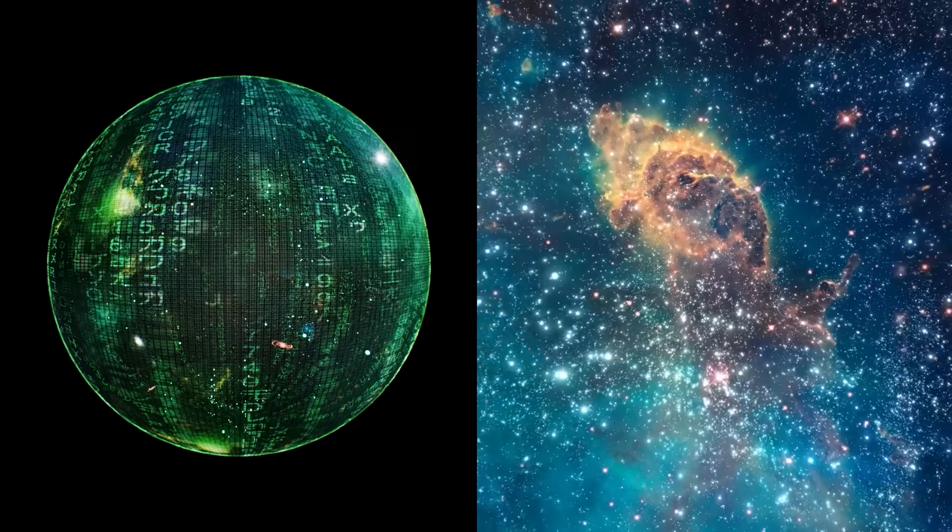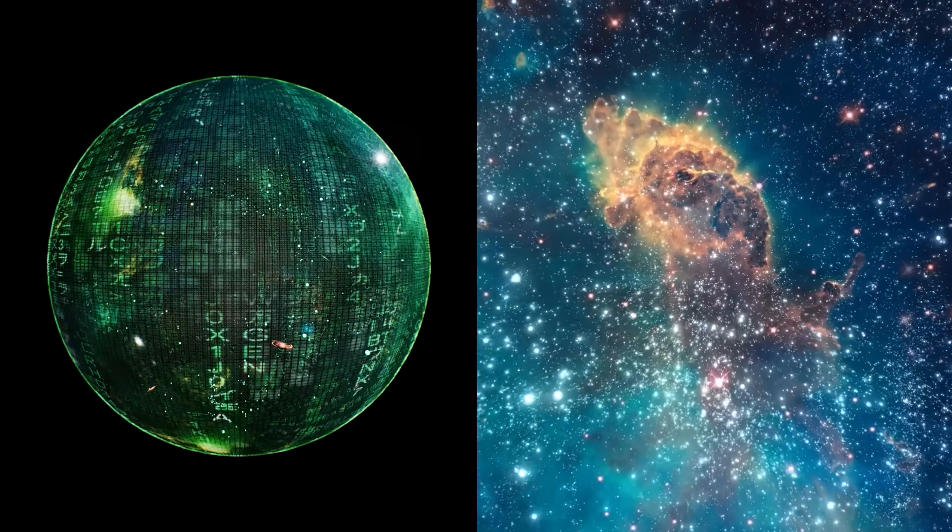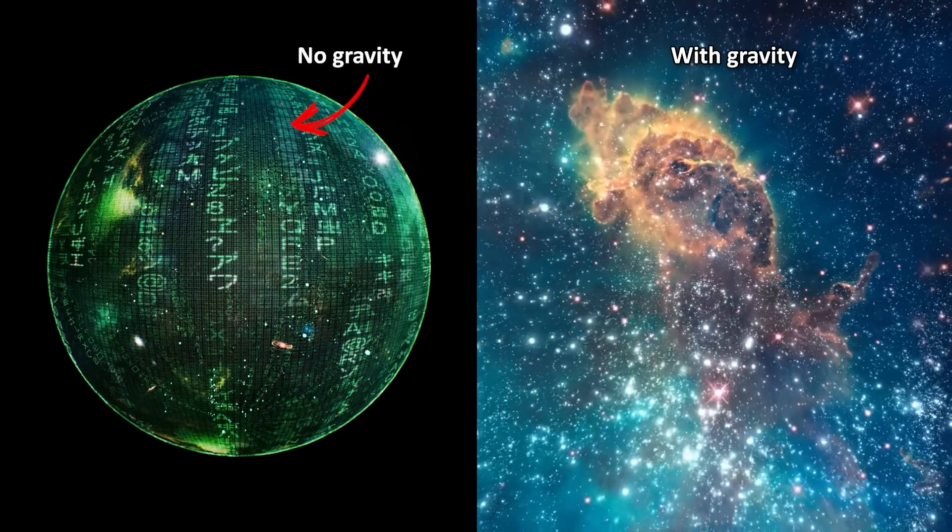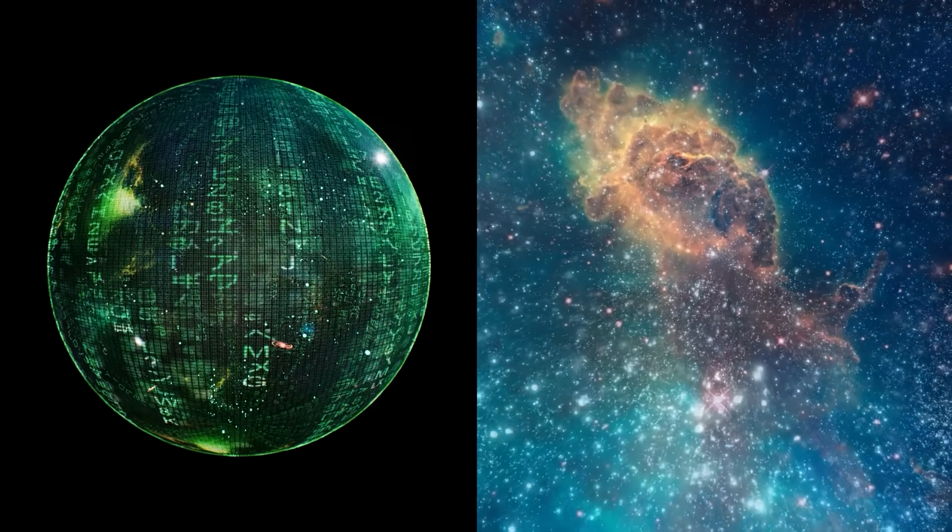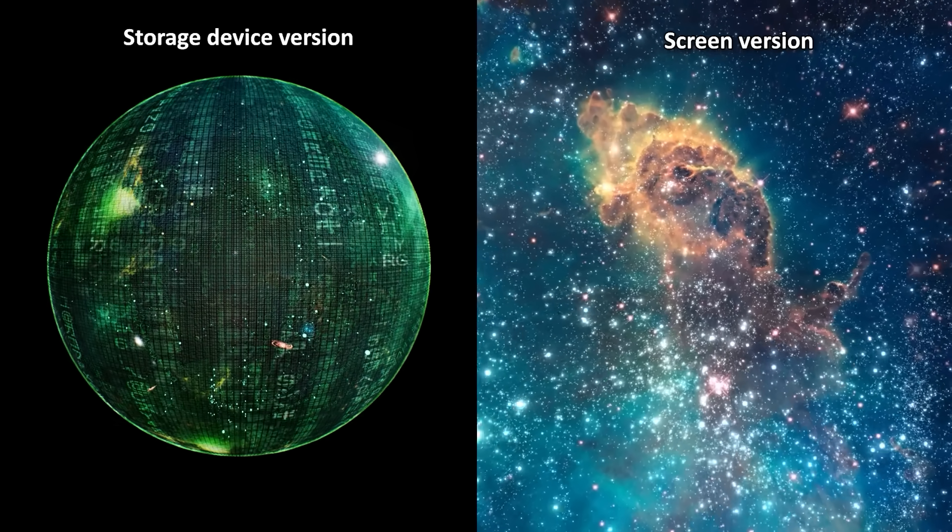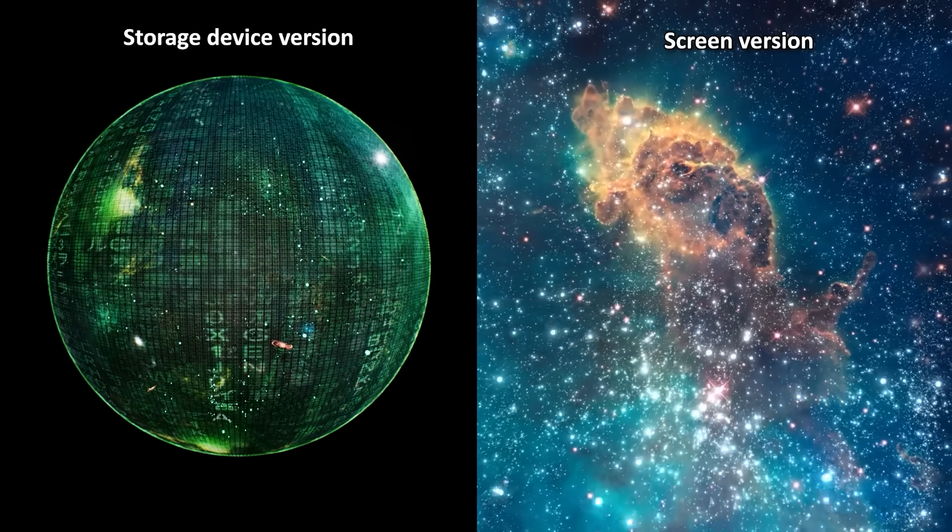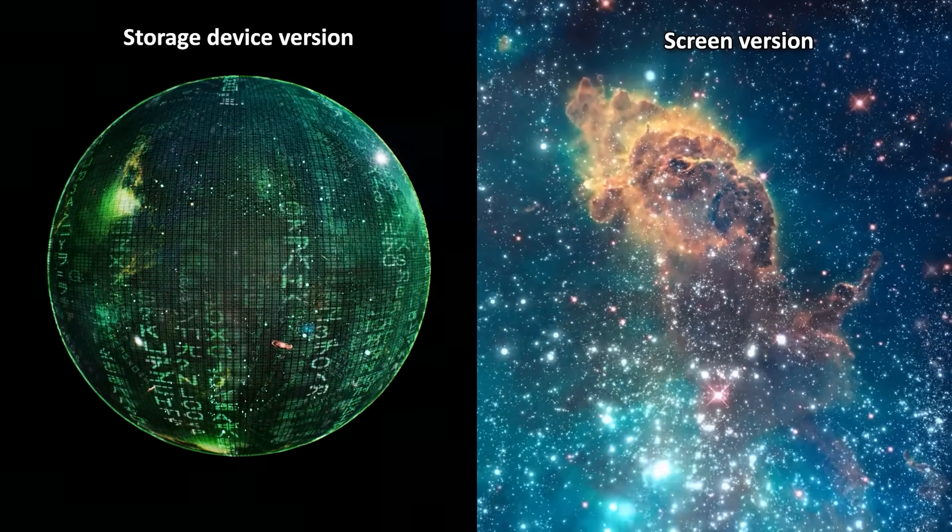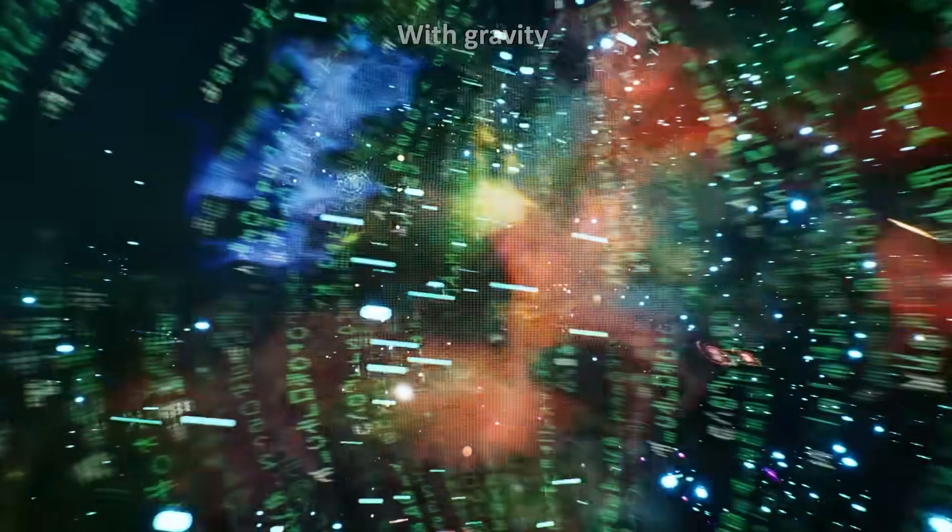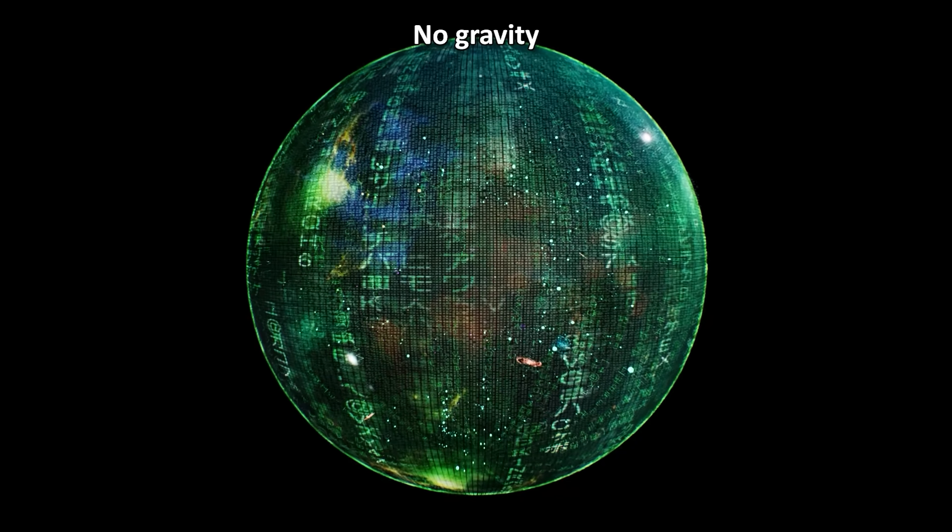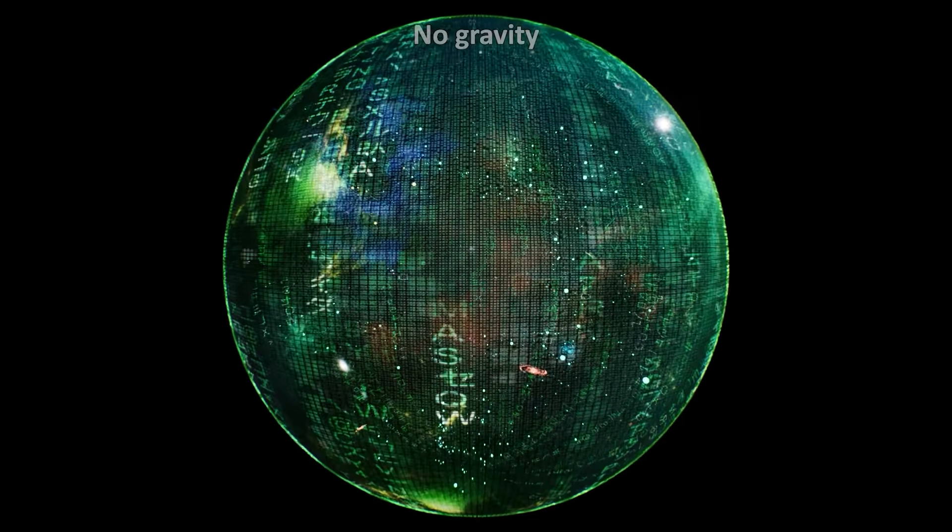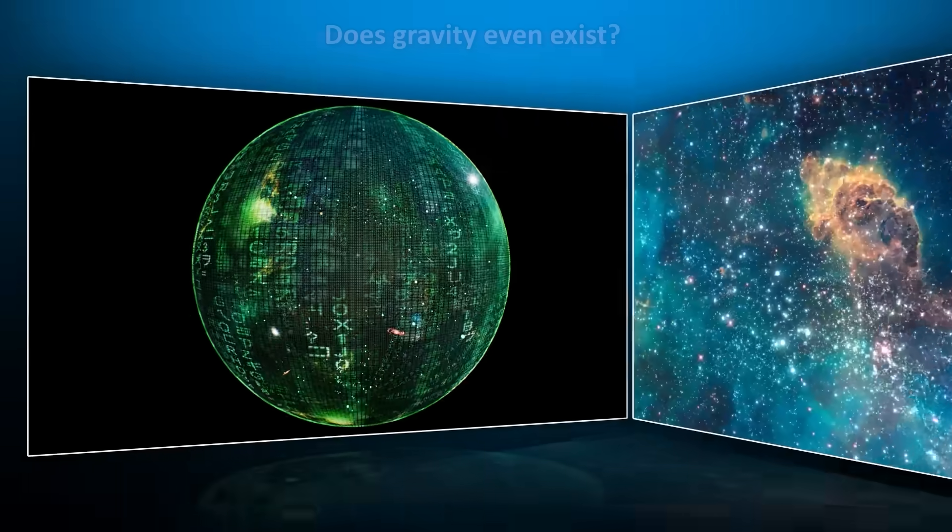This is the essence of a revolutionary concept in physics called the ADS-CFT correspondence. In simple terms, ADS-CFT suggests that two totally different worlds, one with gravity and one without, can actually be two sides describing the same reality. But if one has gravity and the other one doesn't, this raises an intriguing question. If our universe with gravity can be described perfectly by a model with no gravity, is gravity nothing more than an illusion? Does it even exist?